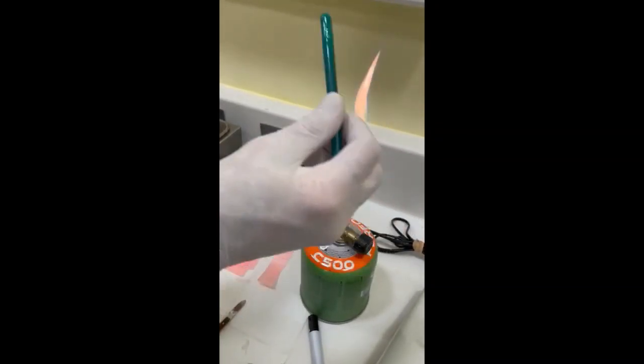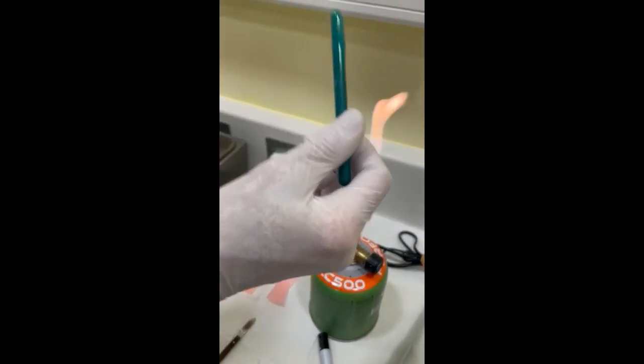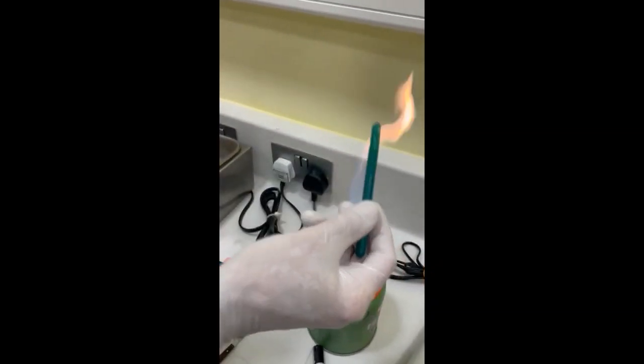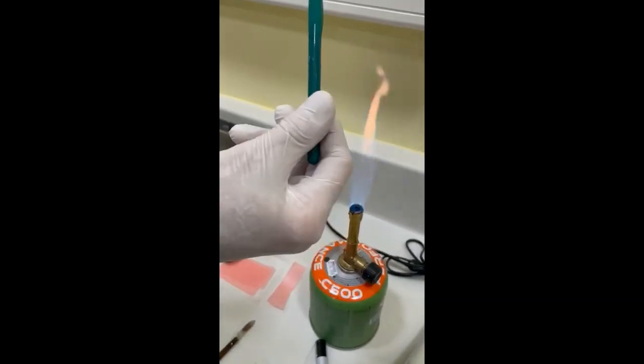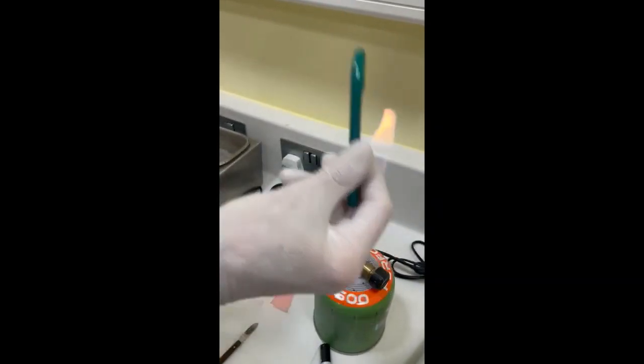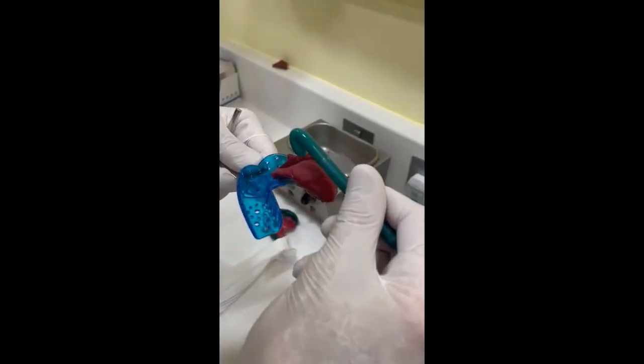So again, heat it gently, don't let it spit, don't let it catch fire. Just so it just starts to glisten, add it to the tray.